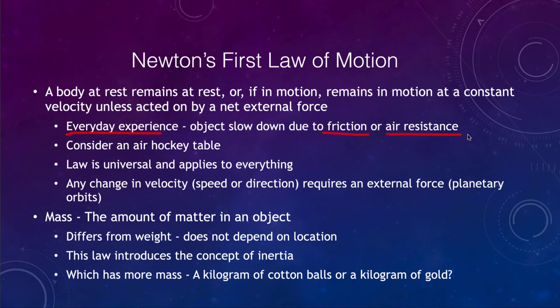The reason it does not continue at constant velocity is because of friction. Friction or things like air resistance can slow down an object — those can be the external forces acting. One example we could look at is an air hockey table, which uses a jet of air to keep the puck from touching the surface and keep it moving very easily. If you slide a puck across an air hockey table, it pretty much travels at the same speed on the other side as when it started, and that's because of Newton's first law.